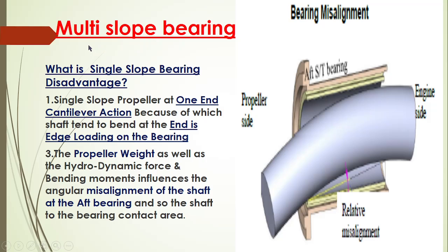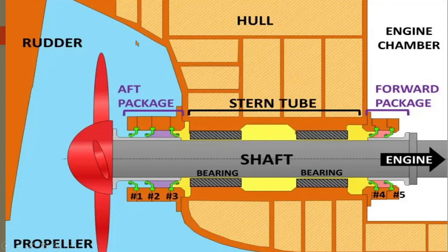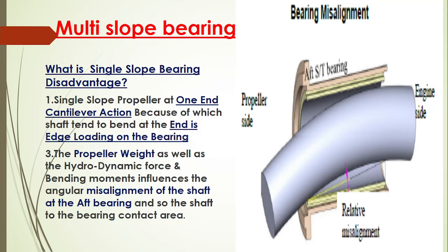So what is a multi-slope bearing? This multi-slope bearing is talking about the improvement in design of the stern tube lubrication system. The stern tube lubrication system has been improved from the single-slope to the multi-slope. Before understanding the multi-slope, we need to understand what problem was happening in the single-slope — what is the single-slope bearing disadvantage?